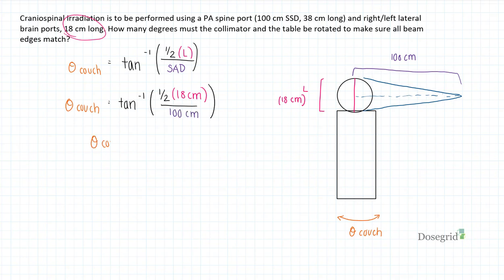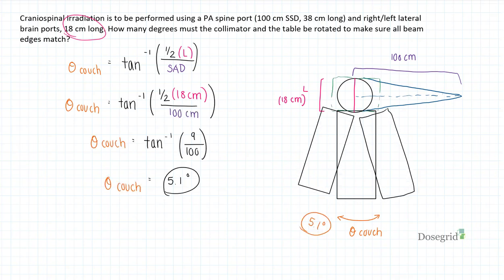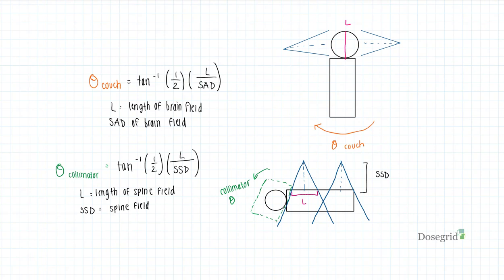Solve it out. You get 5.1 degrees for your couch. And that's how you do a simple divergence calc for craniospinal radiation. Check out DoseGrid for more examples. Links are down below.